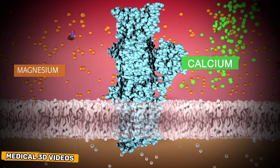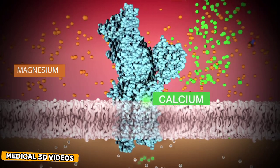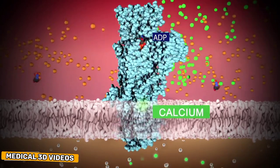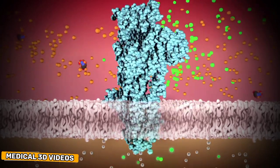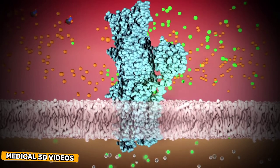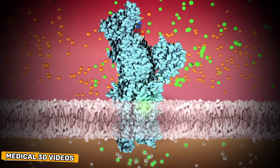The calcium pump is aided by magnesium and powered by ATP to move calcium ions back to the sarcoplasmic reticulum after each muscle contraction.